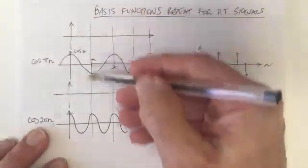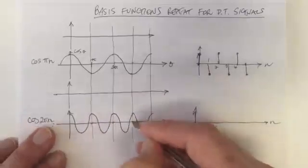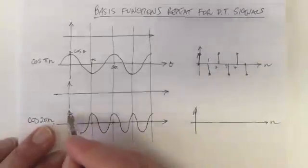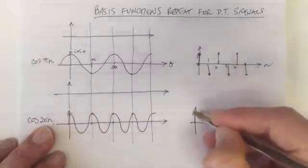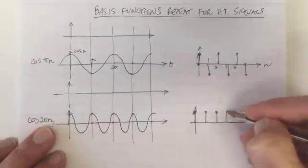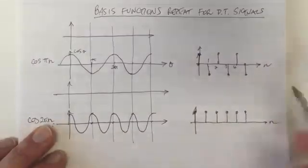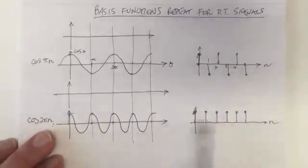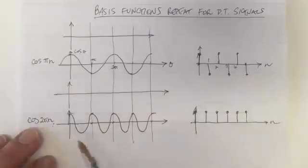So cos(2πn) — we're sampling at the same places. At each sampling point we've got a 1, a 1, a 1, a 1. So cos(2πn), which is a signal that changes twice as fast, is now a discrete time signal that is a constant. These are now different basis frequencies — cos(2πn) is twice the frequency of cos(πn).